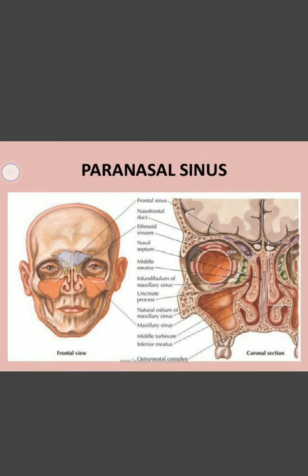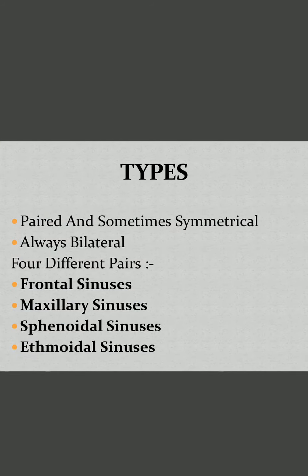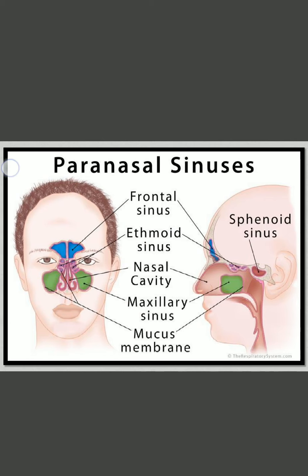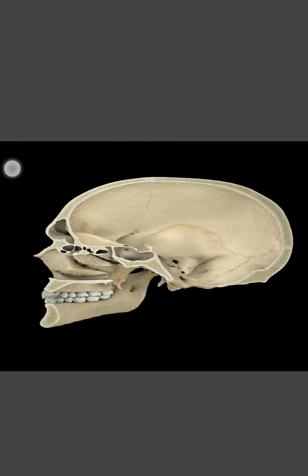These are the various paranasal sinuses. They are paired and always bilateral — symmetry may or may not be present. They are four in number: frontal sinuses, maxillary sinuses, sphenoidal sinuses, and ethmoidal sinuses. In this mid-sagittal section of the skull bone you can see the frontal sinus, the ethmoidal sinuses, and the sphenoidal sinus.